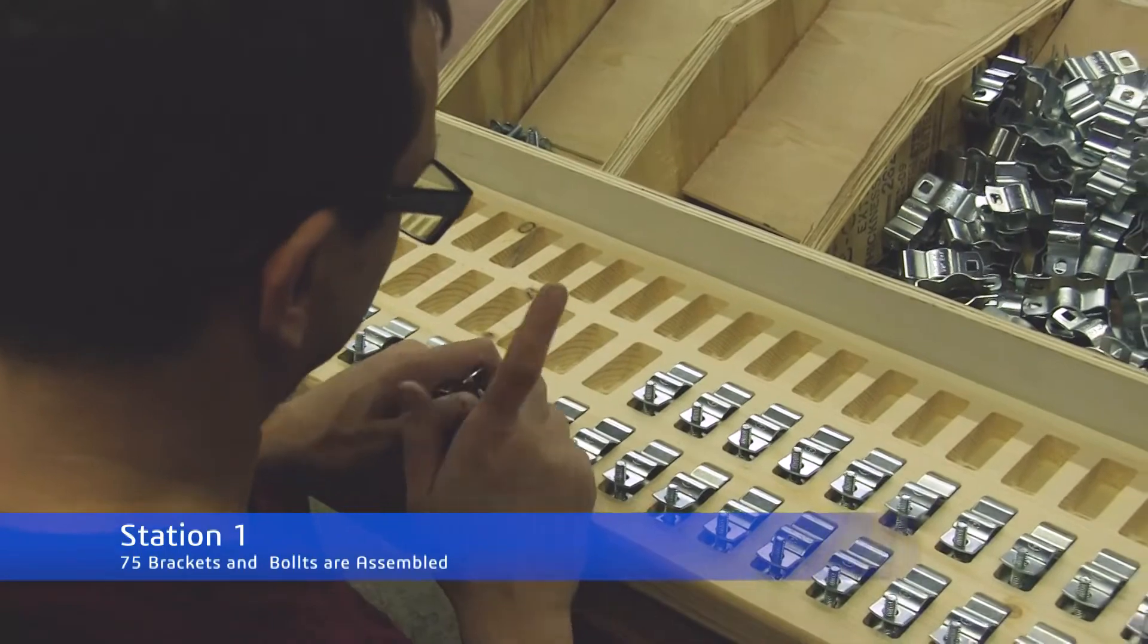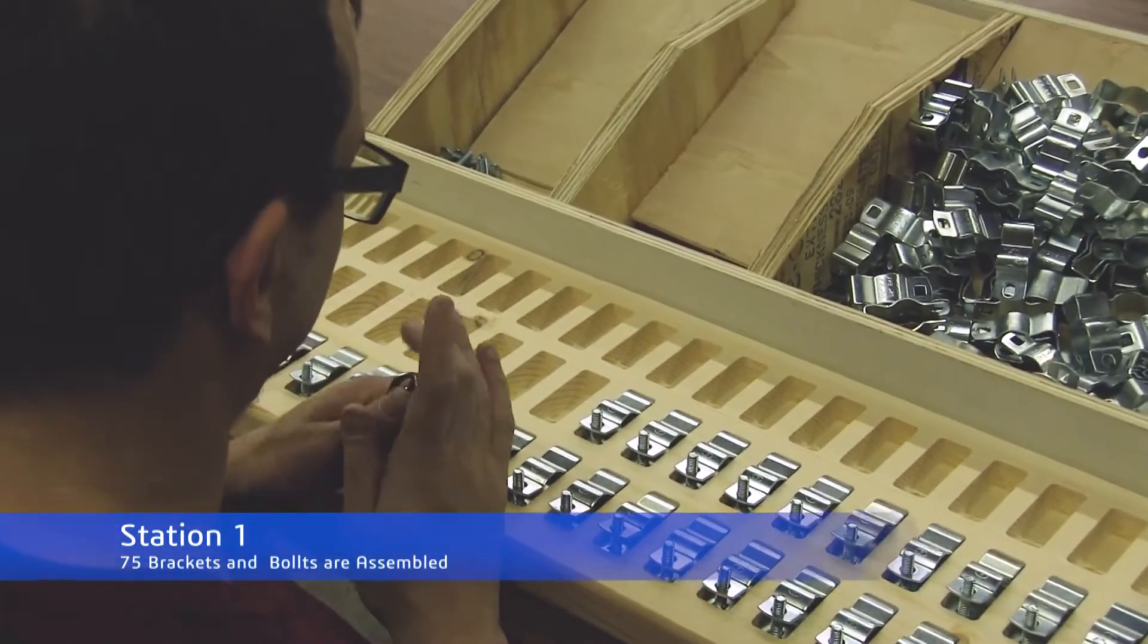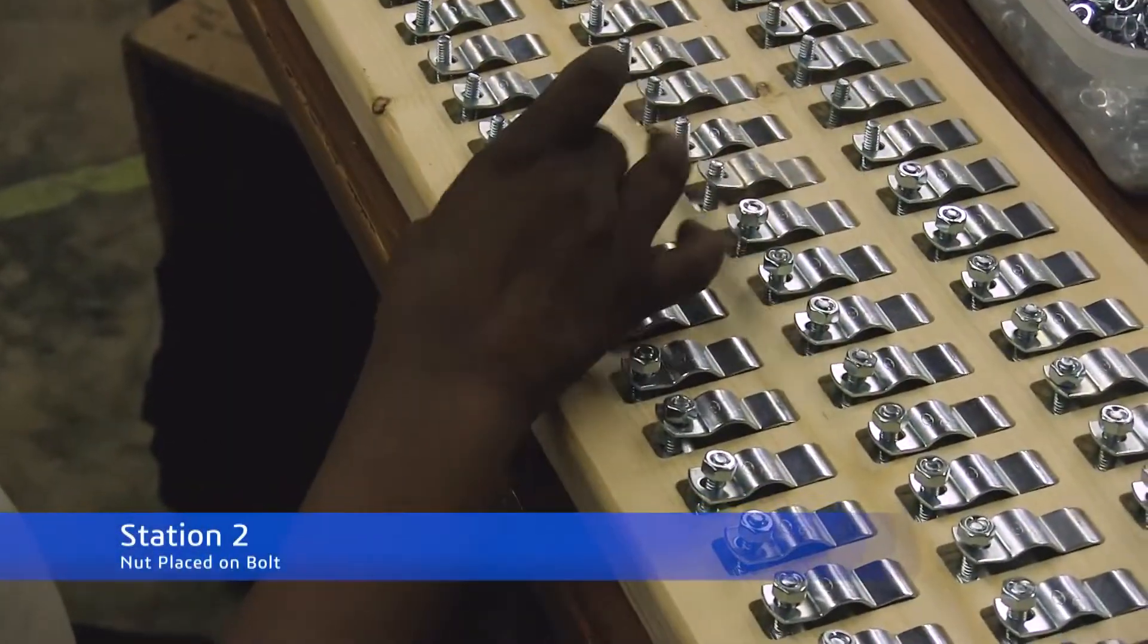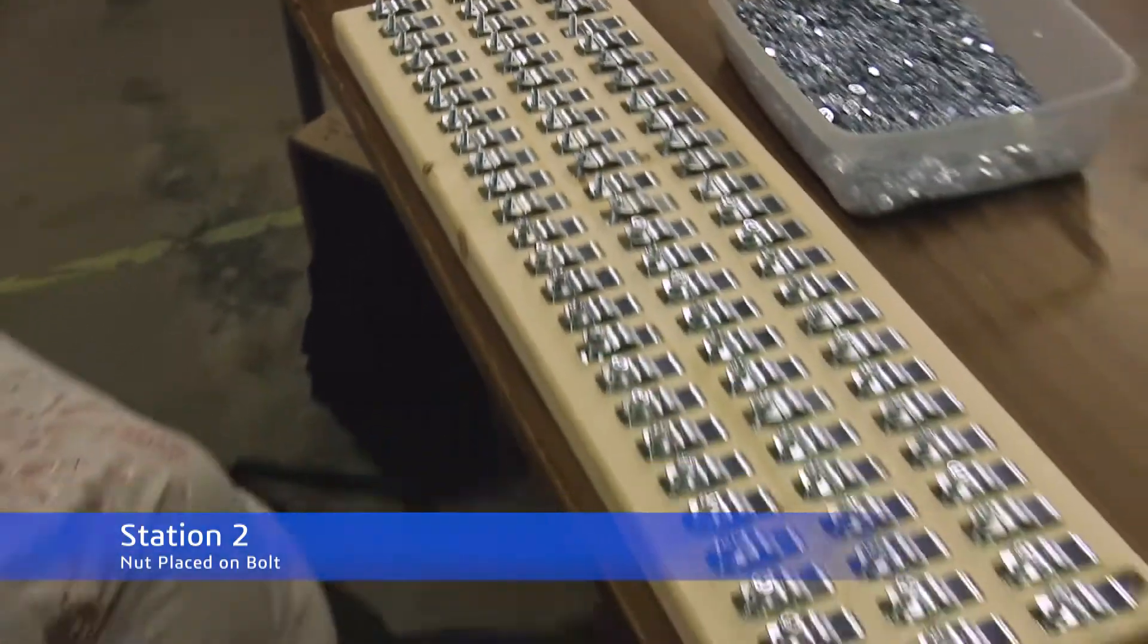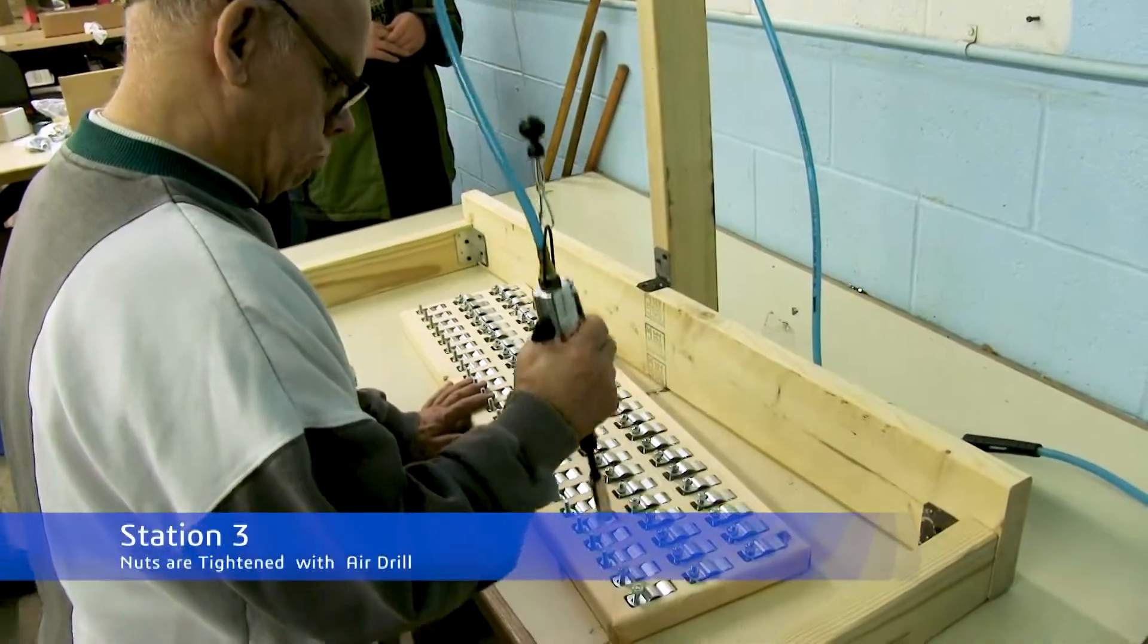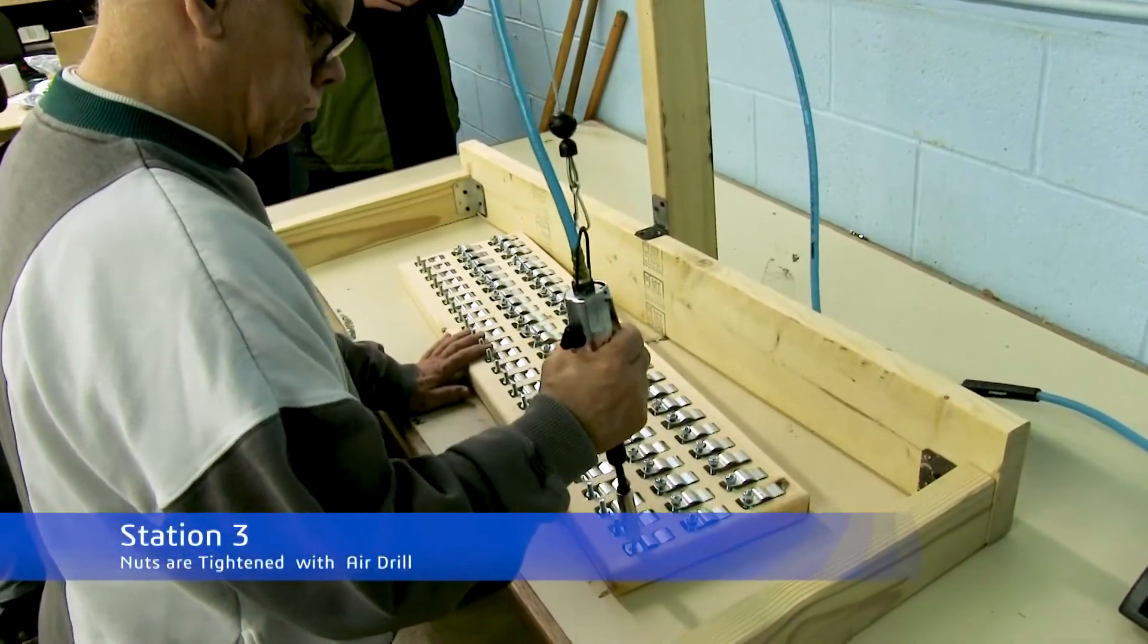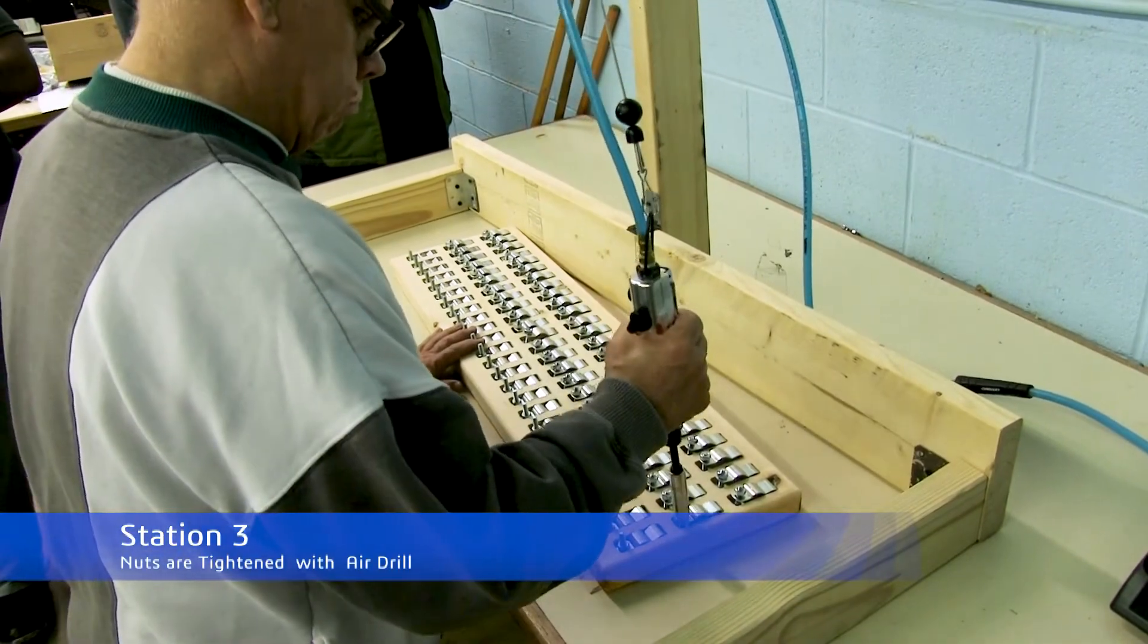At Station 1, the worker assembles 75 brackets and bolts and places them into the jig. Next, at Station 2, a nut is threaded onto the exposed end of the bolt. Finally, at Station 3, the nut is tightened using a suspended air drill. That turned out to be Bobby's favorite workstation.